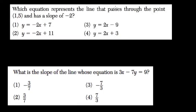Which equation represents the line that passes through the point 1, 5 and has a slope of negative 2? So these two are out because their slopes are positive 2. We're looking for a slope of negative 2.